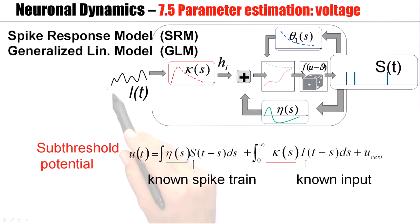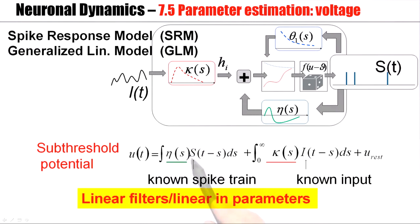An experimentalist injects the current. So we have a known input, and at the same time, he observes the spike train. The spike train is known as well. Now the voltage, given the spike train and given the input, is just a linear convolution. It's linear in the parameters. Let me explain what this means.